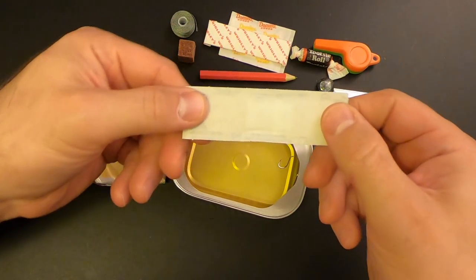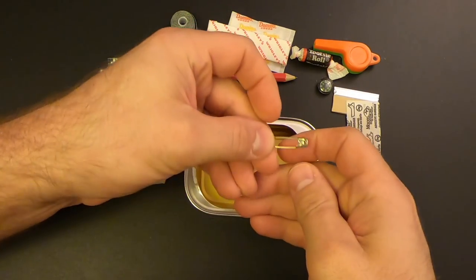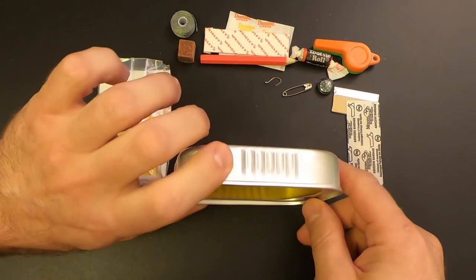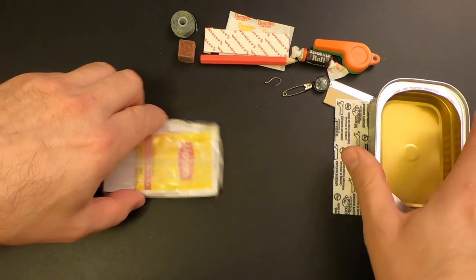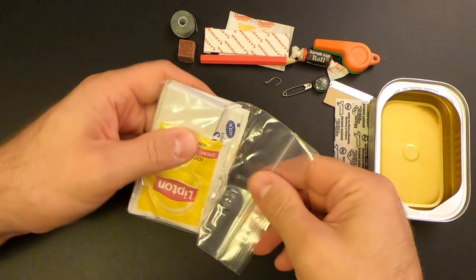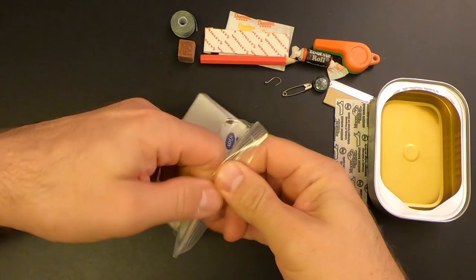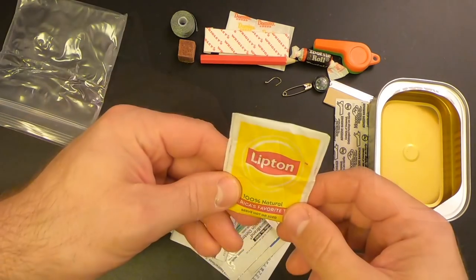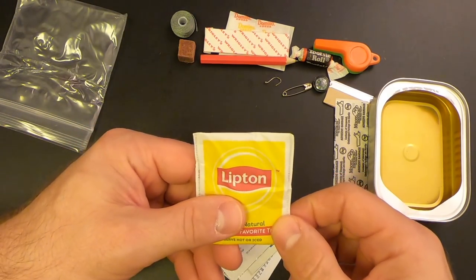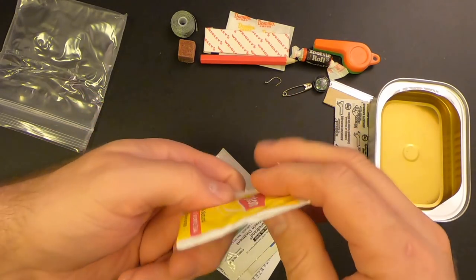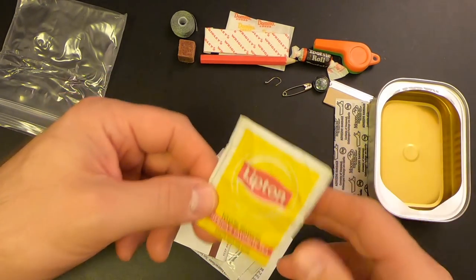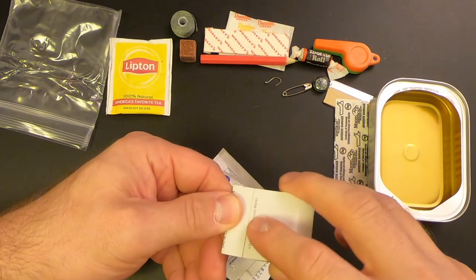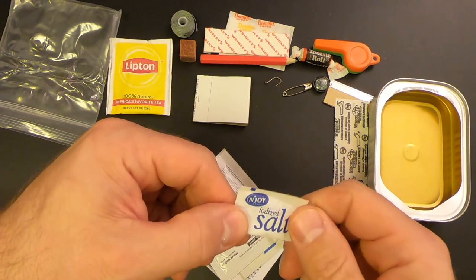And then we've got a single Band-Aid. And then we've got a safety pin and a single fishing hook. So now let's open up this little bag and see what's in here. Alright, so we've got some Lipton tea. And you could use the sugar in the tea if you wanted to. And the tea is just a good morale boost and it can warm me up inside. It's always a good thing to have.